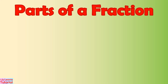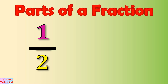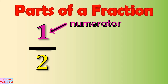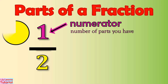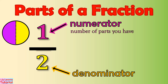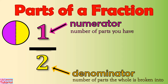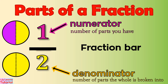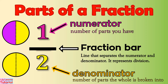These are the parts of a fraction. This is the numerator — it is the number of parts you have. This is the denominator — it is the number of parts the whole is broken into. This is the fraction bar. It separates the numerator and denominator, and it represents division.